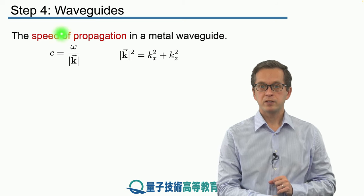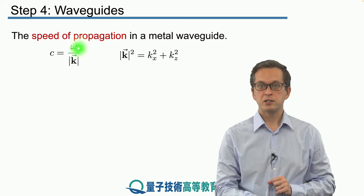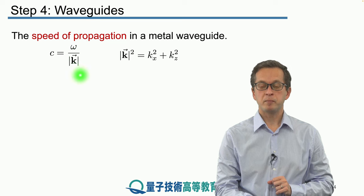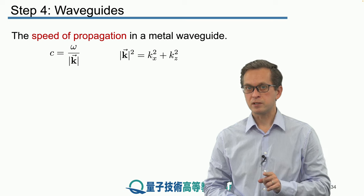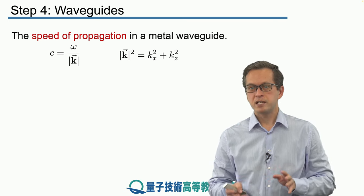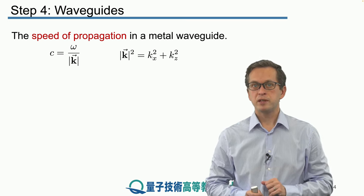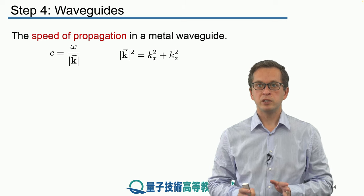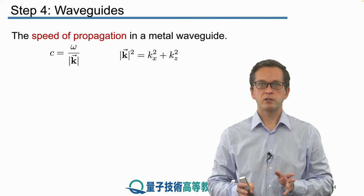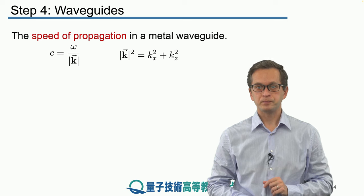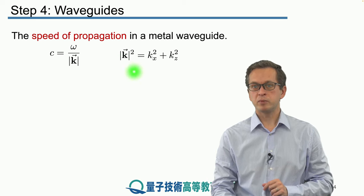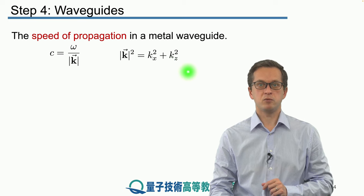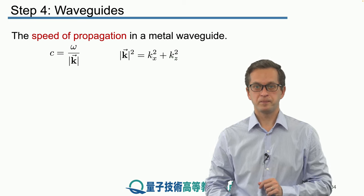So, we have the speed c of our propagation given by omega divided by the magnitude of the k vector. I haven't really mentioned anything specific about what's inside the waveguide. Is it some dielectric or not? But to keep things simple, we're just going to assume that it's air or vacuum. In other words, the refractive index is 1. And the square of the k vector is given by kx squared plus kz squared, from simple Pythagoras.